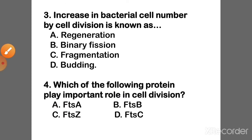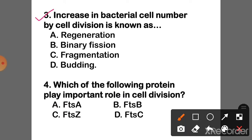Question 3: Increase in bacterial cell number by cell division is known as what? The correct answer is Option B — Binary fission.